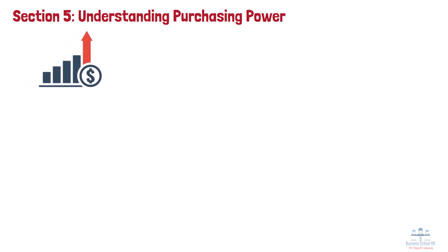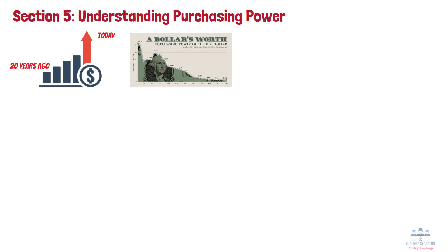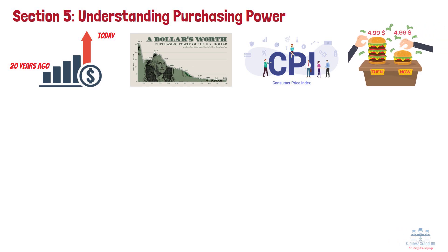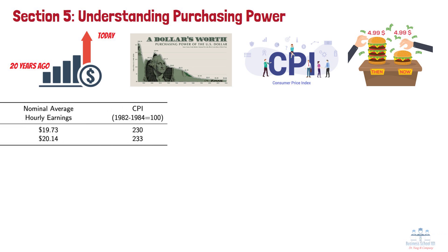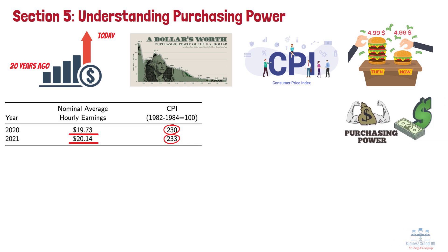Section 5: Understanding Purchasing Power. You are likely to receive a much higher salary after graduation than your parents did 20 or more years ago, but prices 20 years ago were, on average, much lower than prices today. The purchasing power of a dollar was much higher 20 years ago because the prices of most goods and services were much lower. Price indexes such as the CPI give us a way of adjusting for the effects of inflation so that we can compare dollar values from different years. The BLS Establishment Survey gathers data on average hourly earnings of all employees working at private firms. The table shows nominal average hourly earnings of $19.73 in 2020 and $20.14 in 2021, with a CPI of 230 and 233, respectively. In order to measure changes in purchasing power, we have to convert nominal values to real values.